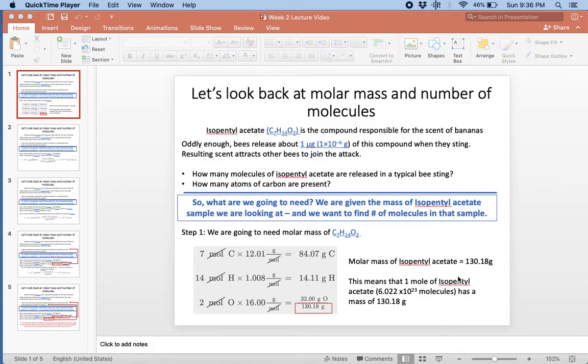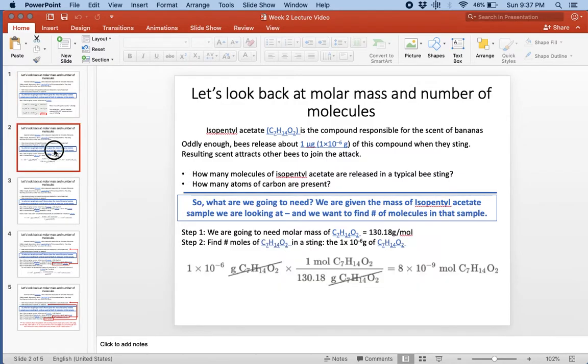That's how we ended up with our molar mass of isopentyl acetate. Molar mass means that for every mole of isopentyl acetate—6.022 times 10 to the 23 molecules of it—has a mass of 130.18 grams. Now we have our molar mass.